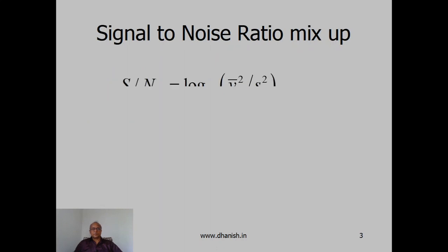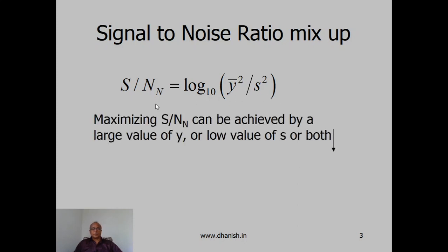First of all, signal to noise ratio mix up. Signal to noise ratio for the case where nominal is best is defined by the log of y bar square by s square. Maximizing signal to noise ratio can be achieved by having a large value of y bar or a low value of s or both together.